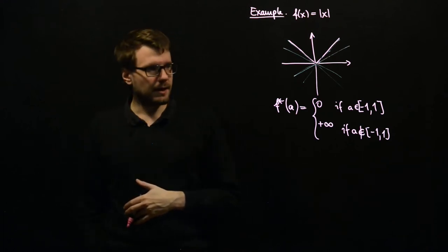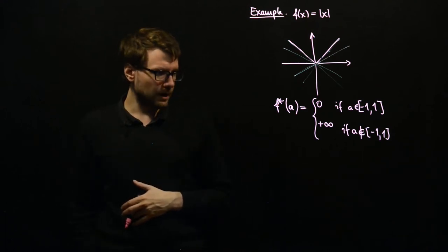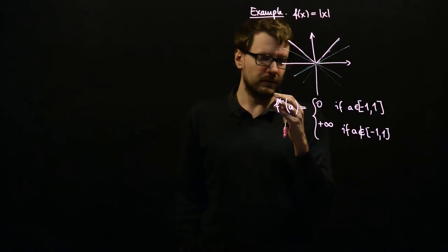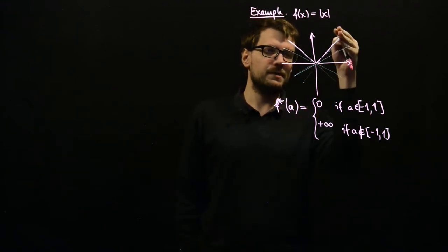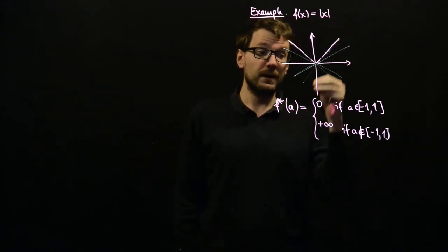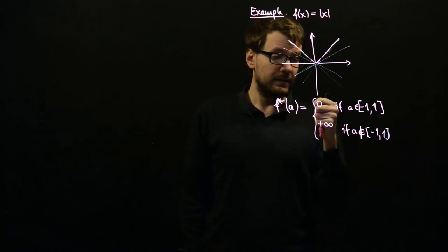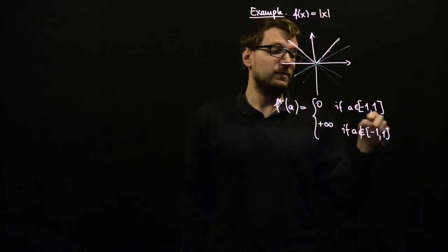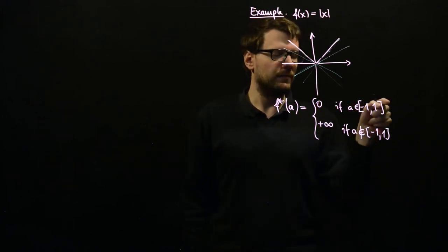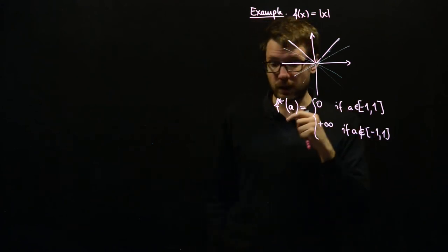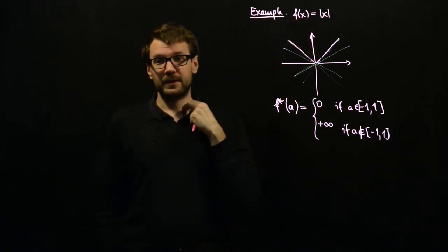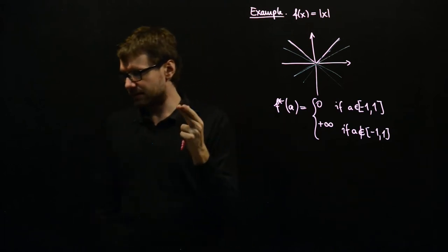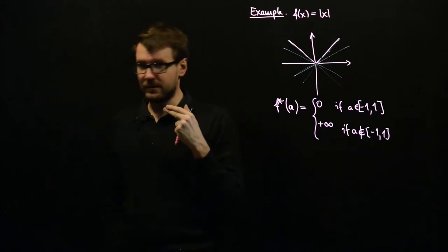You can also see that the conjugate function of the absolute value is the indicator function of a set — namely, the indicator function of the closed interval between minus 1 and 1. As we will see in the next examples, this is not a coincidence.